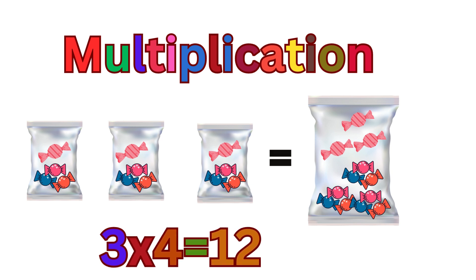If you have three bags with four candies each, you have 12 candies. 3 multiply 4 equals 12.